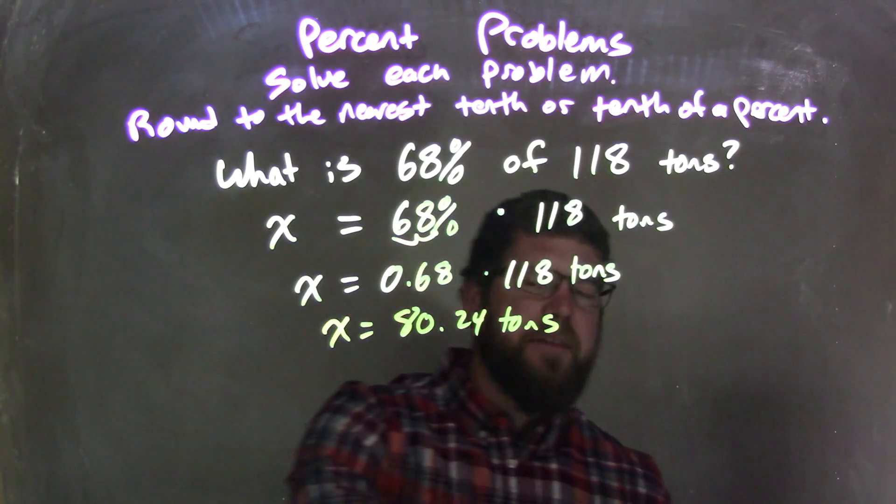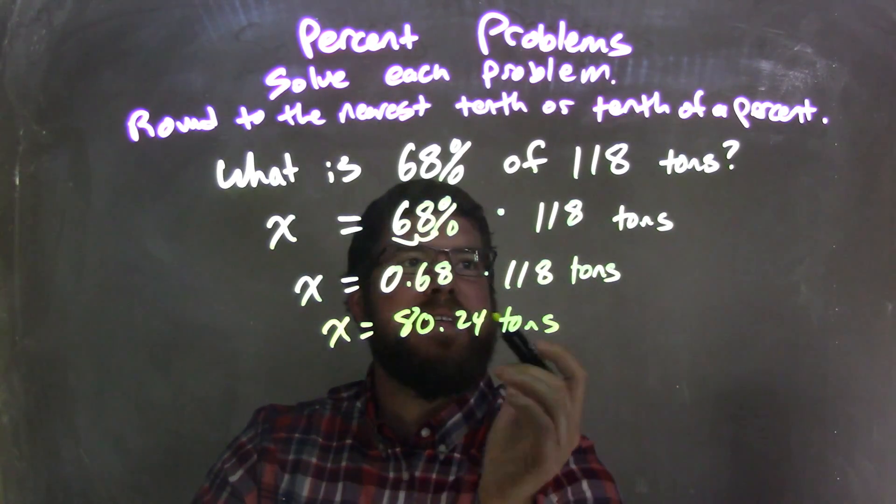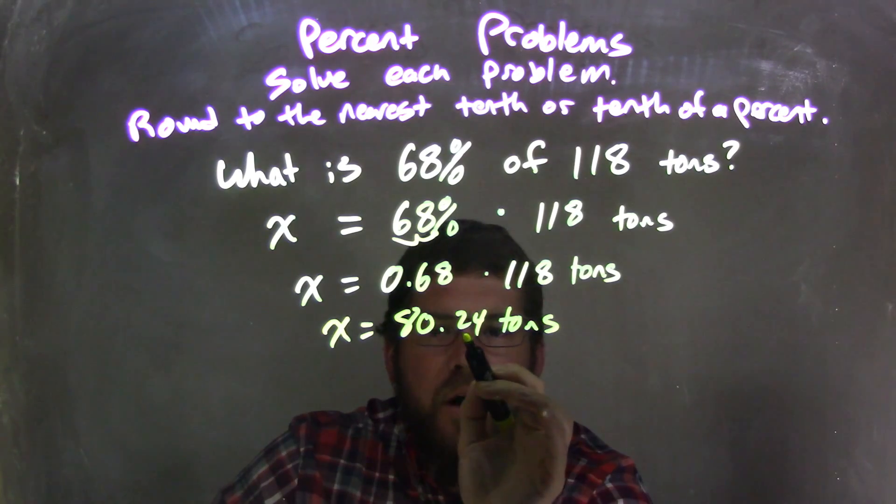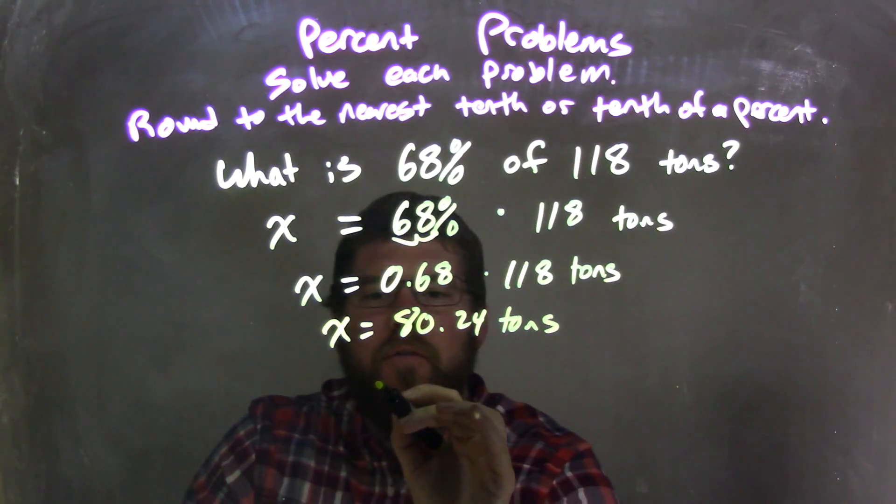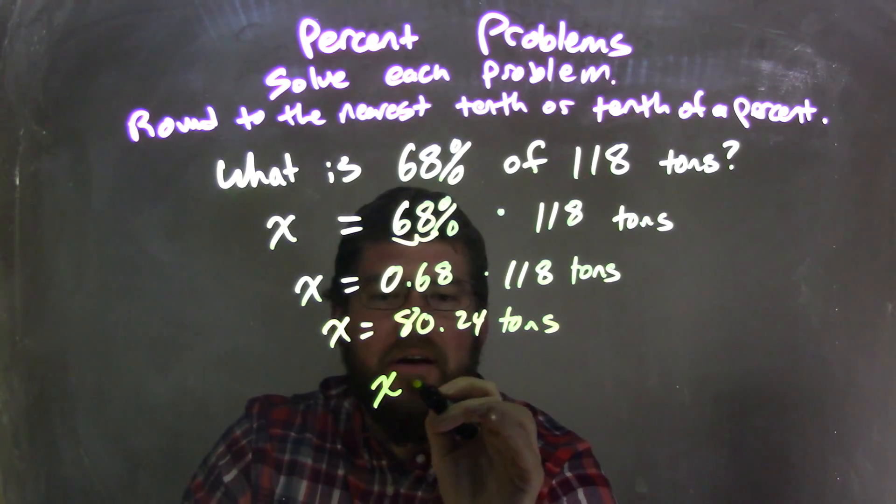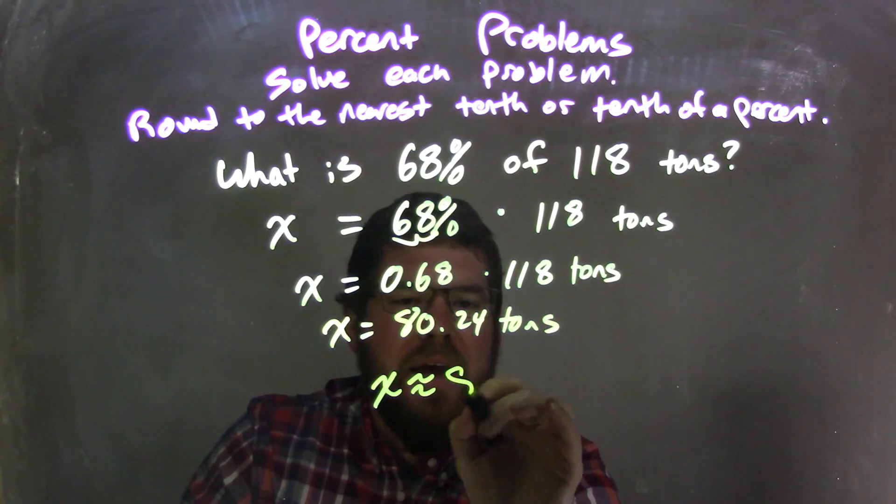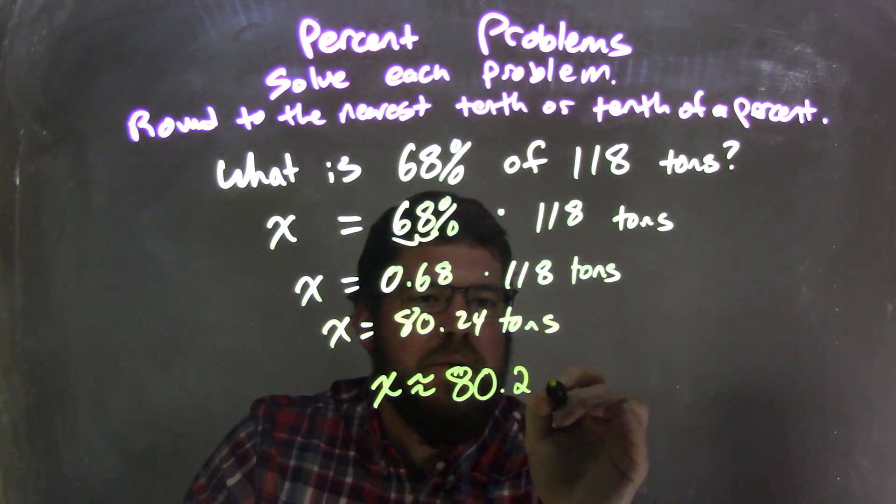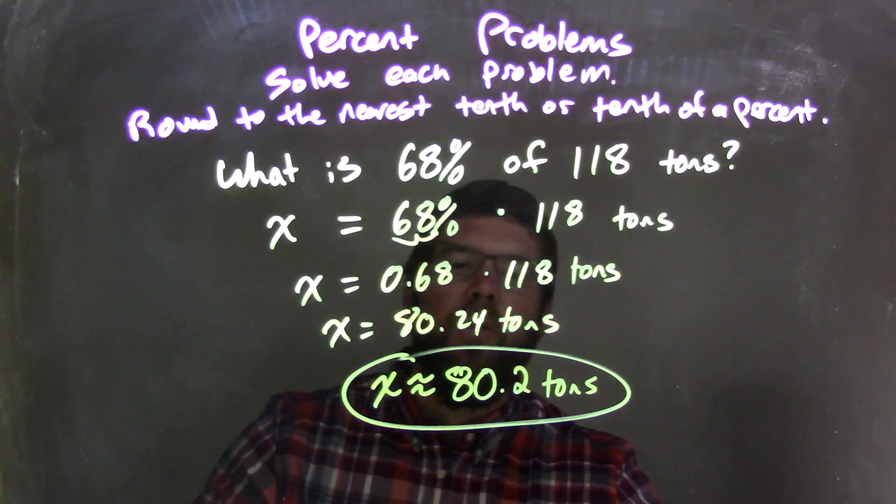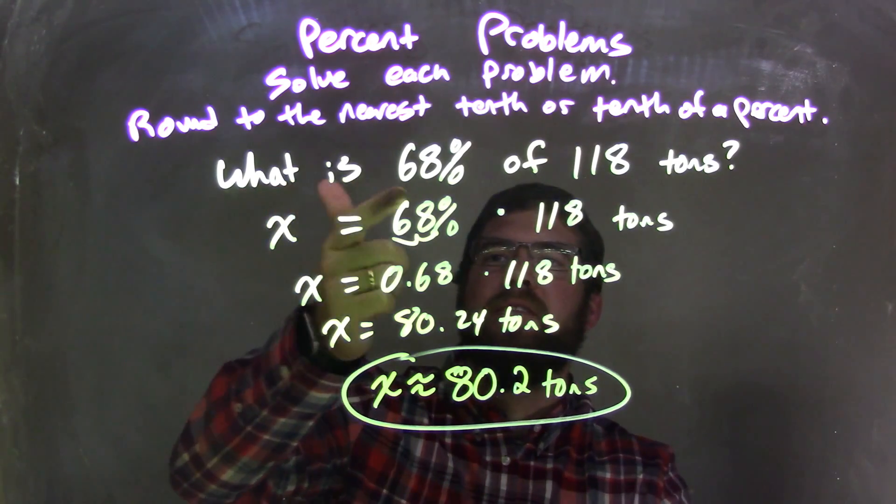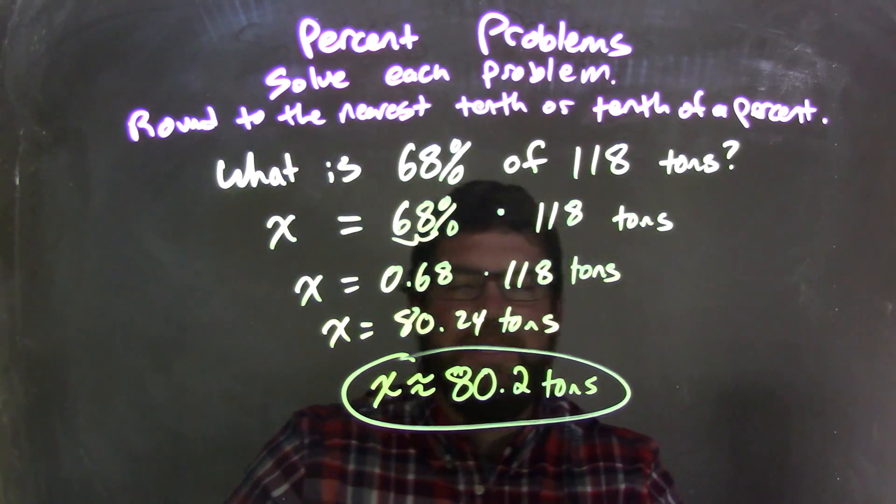But then, they ask us to round to the nearest tenth. So look at the 2 and the 4. The 4 causes the 2 to stay where it is, or round down. And so our final answer is X is approximately 80.2 tons. That answers our question: 80.2 tons is 68% of 118 tons.